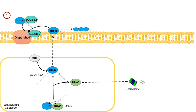Another way by which the hedgehog proteins can be released from the cell involves the hedgehog proteins accumulating on the plasma membrane. If we keep releasing the HHN protein from the endoplasmic reticulum, it can accumulate on the plasma membrane, and these proteins can then be released as a soluble multimer — they aggregate together and pop off of the plasma membrane. This is the second way that hedgehog proteins can be released from the cell.